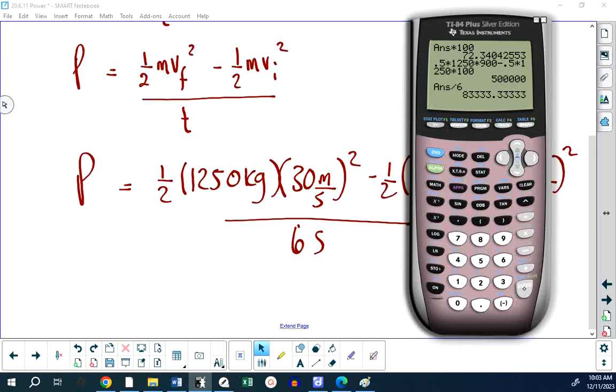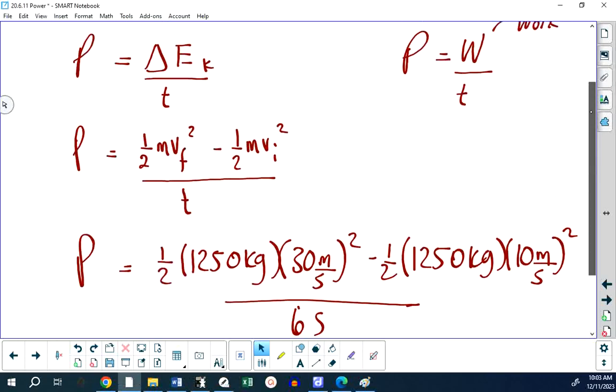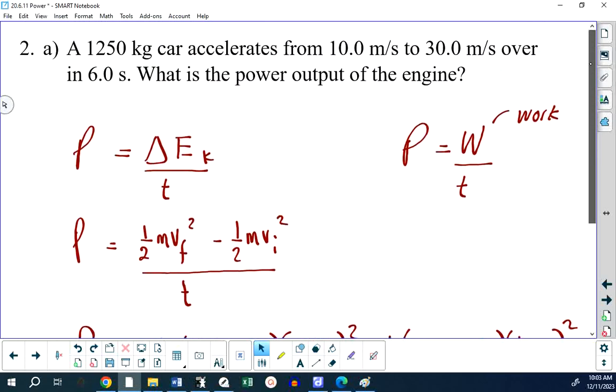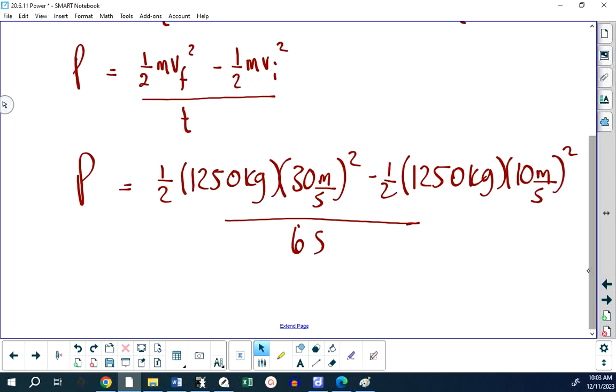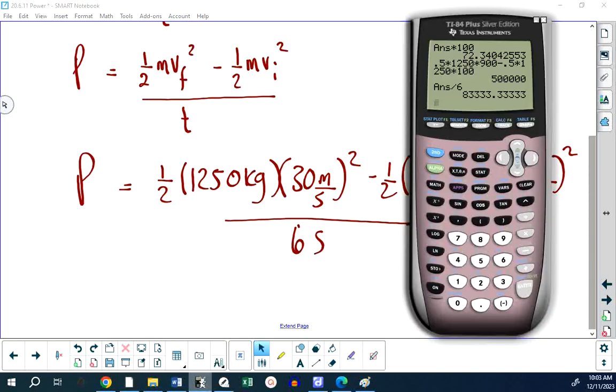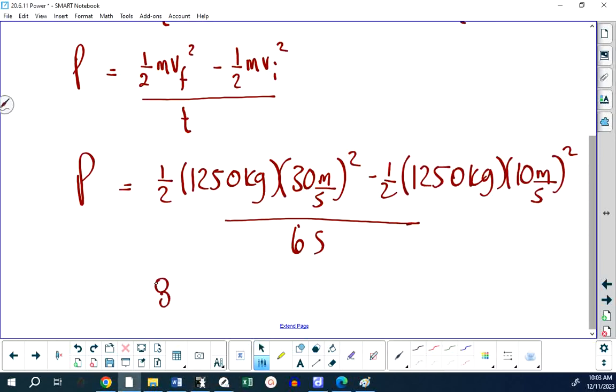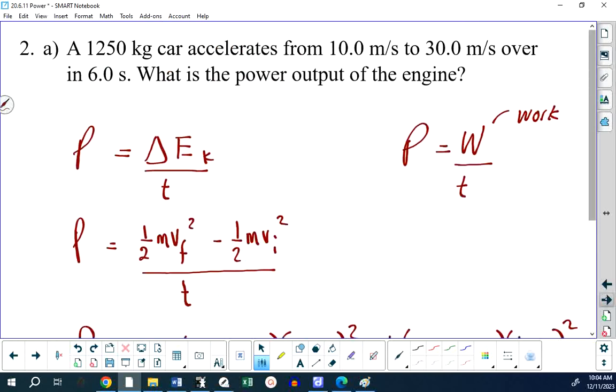So, 8.3 times 10 to the four joules per second. As I'm teaching this, I prefer to say joules per second, but yeah, it is 8.3 times 10 to the four watts. As long as you know a watt is a joule per second. Any questions with 2A?